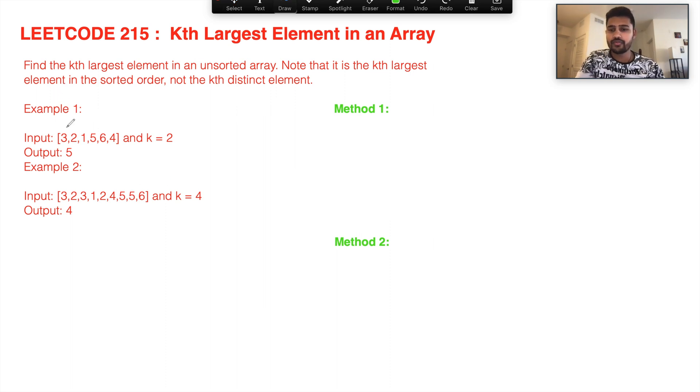Let's go over the examples. The first example is something like this: 3, 2, 1, 5, 6, 4, and k is equal to 2. So basically we need to return the second largest element. In this case, if you see manually, the first largest is 6 and second largest is 5, so you return 5.